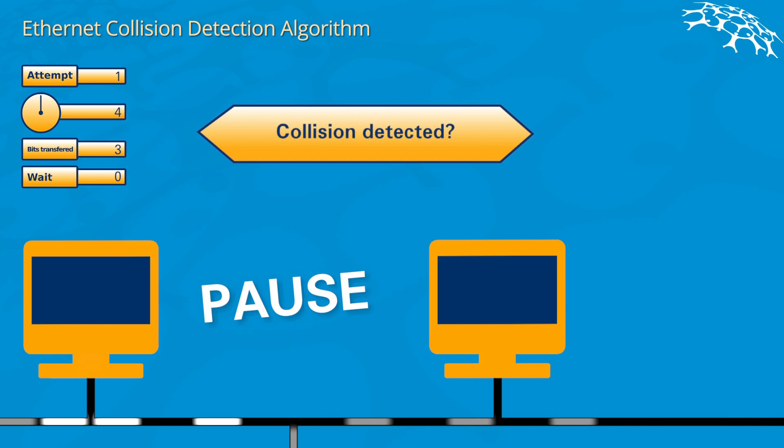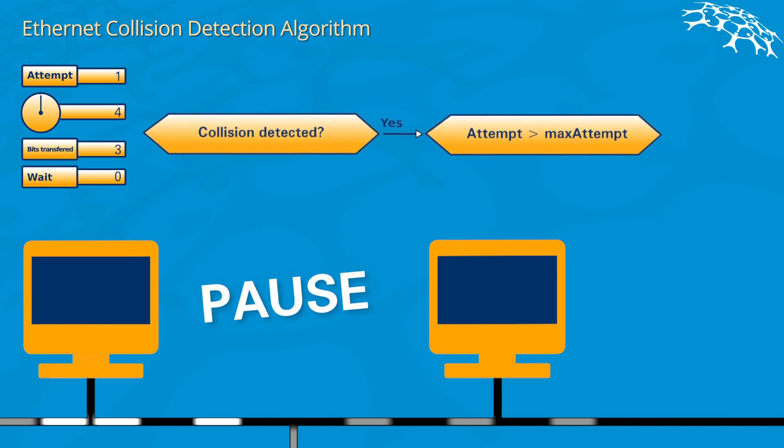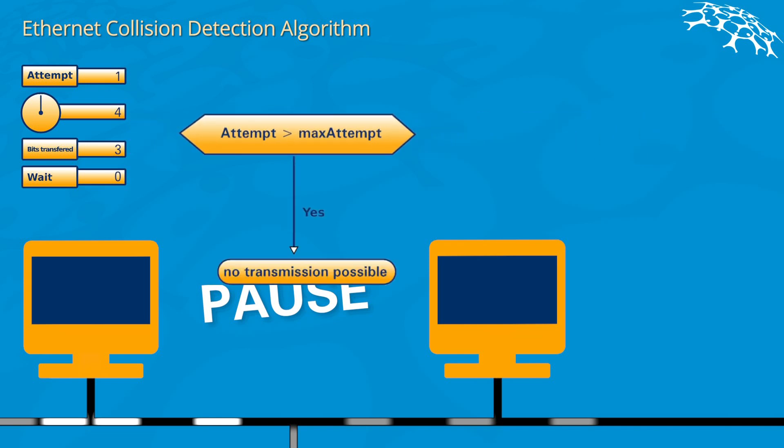Now we see maybe something is wrong - another computer is already trying to block the shared medium and we also tried to block the medium, and this obviously collides. The first thing the algorithm will now ask itself is: is the attempt counter bigger than the maximum number of attempts that are defined? This is usually a number like 20. If the answer is yes, we would stop here and tell the user we can't transfer the data, but probably the answer will be no.